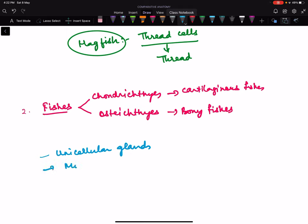In fishes, if you see, they have both unicellular glands as well as multicellular glands. Unicellular glands are the same - they are all mucous glands which secrete mucin, which in contact with water forms mucus.